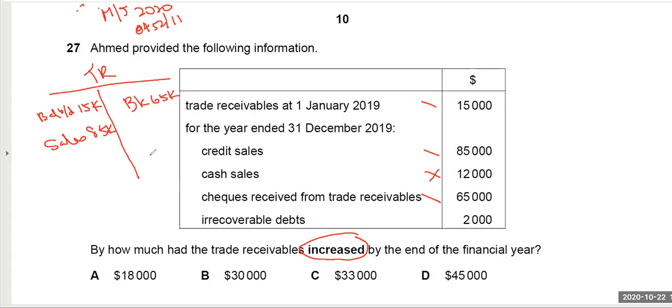Then the irrecoverable debts. Irrecoverable debts, what's the nature of this? This is an expense. So you would debit your income statement for irrecoverable debts and write off. Take it off permanently from trade receivables. So here I will write income statement, irrecoverable debt. Again, short form. Don't do that in your exam. 2,000.